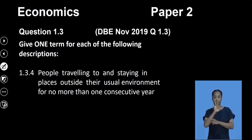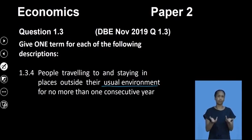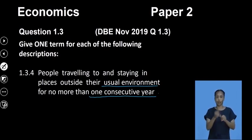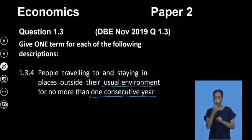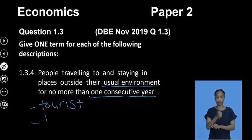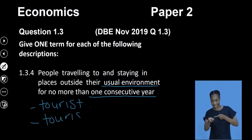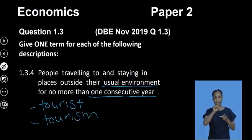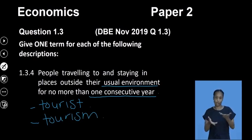Question 1.34: people traveling to and staying in places outside their usual environment for not more than one consecutive year. The answer is tourists — I would also accept tourism. Remember, when you are a tourist, you cannot exceed a year in a particular place. Both tourist and tourism are acceptable answers and this one was quite straightforward.